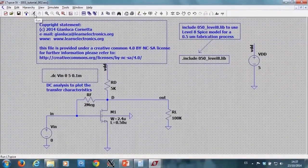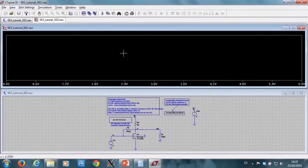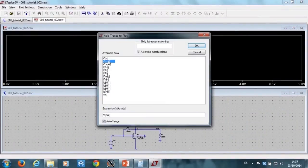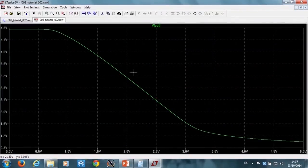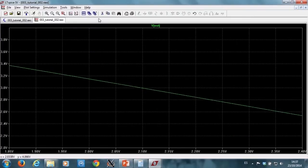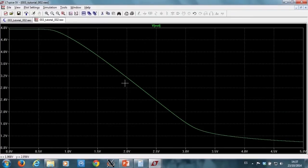If I run the simulation and plot the output voltage, I have my DC transfer function. The voltage gain in saturation is the slope of this curve, of the transfer function, in the saturation region. That is, in the region where the voltage varies linearly.